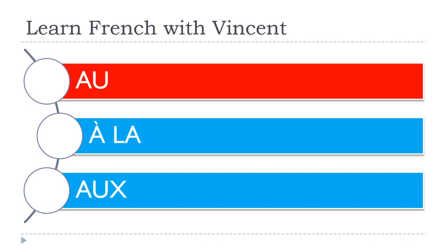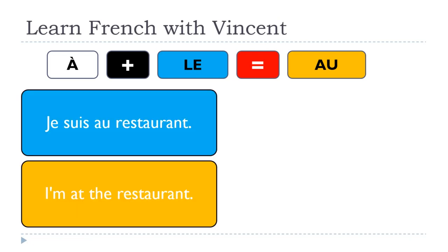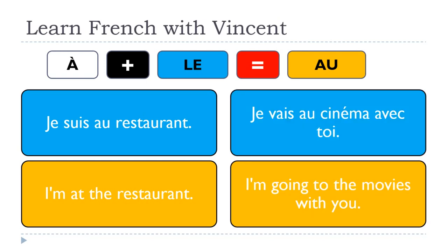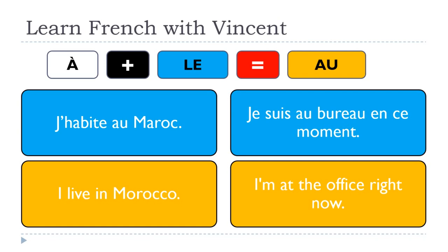Let's see a few examples with the masculine form AU (À + LE = AU): 'Je suis au restaurant' — I am at the restaurant. 'Je vais au cinéma avec toi' — I am going to the movies with you. 'J'habite au Maroc' — I live in Morocco. 'Je suis au bureau en ce moment' — I am at the office right now.